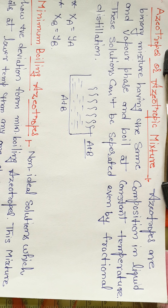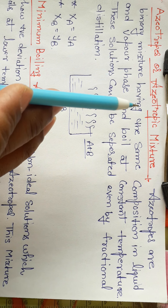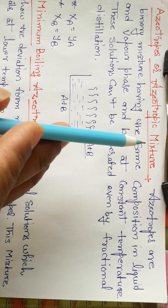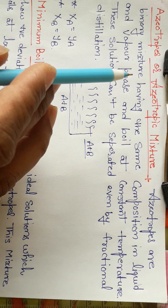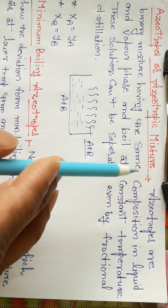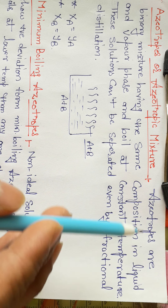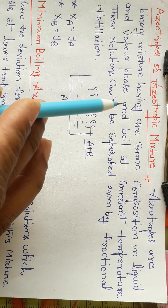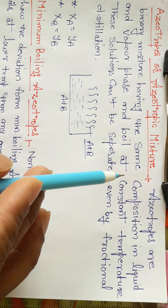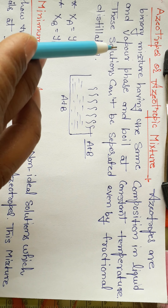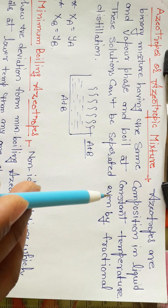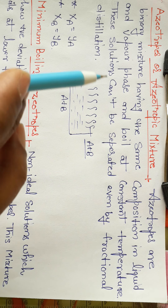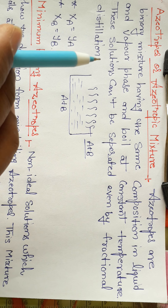Hello students. In this video we will discuss azeotropes or azeotropic mixtures. Azeotropes are binary mixtures having the same composition in liquid and vapor phase and boil at constant temperature. These solutions cannot be separated even by fractional distillation.